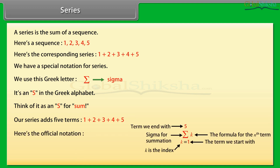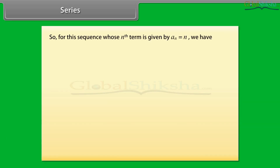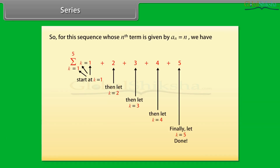Here is the official notation: summation from k = 1 to 5 of k. So for this sequence whose nth term is given by a(n) = n, the summation can be found and it is equal to 15.